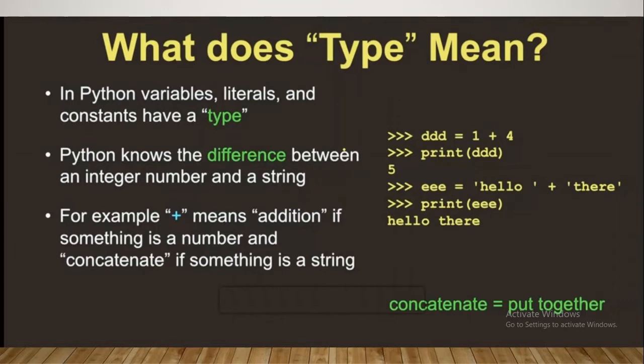The string is a group of characters. For example, plus means addition if something is a number and concatenate if something is a string. Concatenation is just putting together.